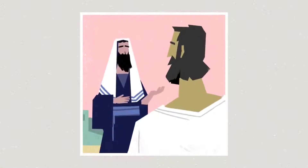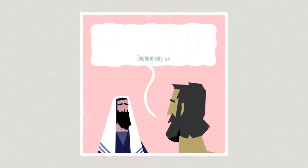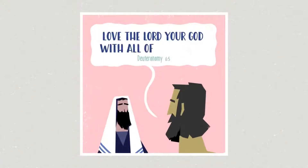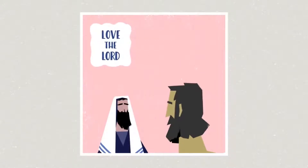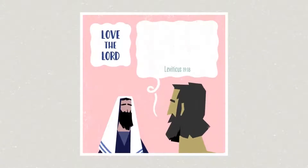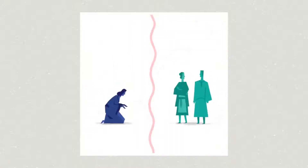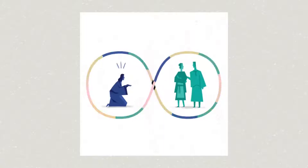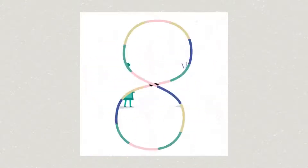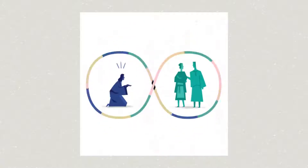One time Jesus was asked about the most important command in the Jewish scriptures, and he first quoted from the ancient prayer in the Torah called the Shema: 'Love the Lord your God with all of your heart.' So love for God is the most important thing. But then Jesus quickly followed up by saying another command from the Torah was also the most important — to love your neighbour as yourself. So which is the most important: loving God or loving your neighbour? Jesus' answer is yes. To ask the question means you don't get his point. For Jesus, they are two sides of the same coin — your love for God will be expressed by your love for people, and vice versa; they are inseparable.